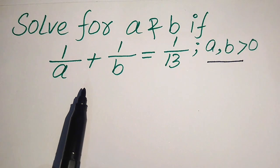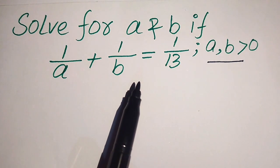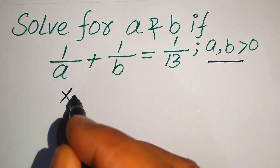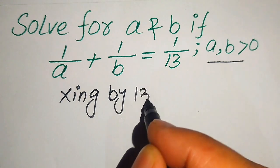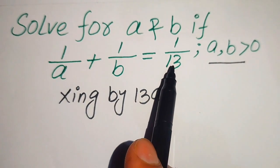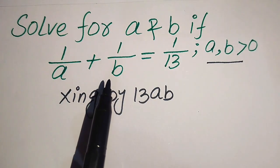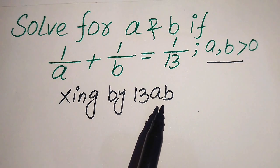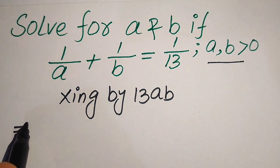First, we need to remove the fractions from both sides. In order to do that, we multiply both sides by 13ab, because the denominator of one term is 13 and the denominators of the other two terms are a and b. So we multiply both sides by 13ab.